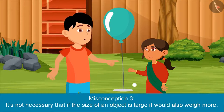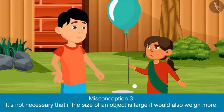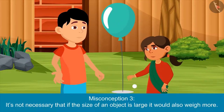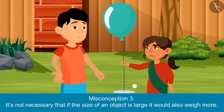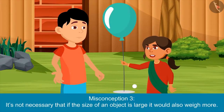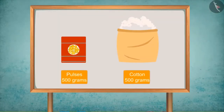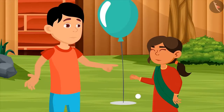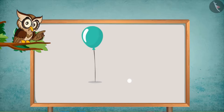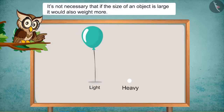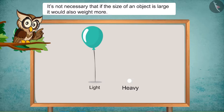Yes, Brother, the balloon is so light! Just now we have seen how a large quantity of cotton was equal to the weight of comparatively less quantity of pulses. Now you understood well. Kids, always remember — the weight of an object doesn't depend upon how big or small it is; it depends upon the heaviness of an object.